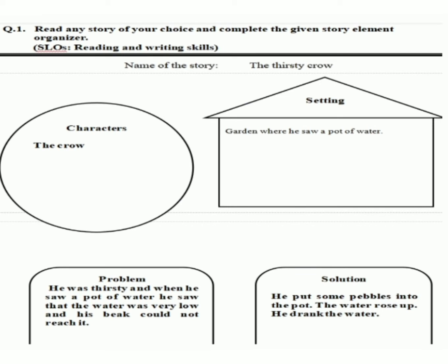Now we will try to solve this question using the concepts of elements we have discussed. I have written my story about the topic: the thirsty crow. A crow was thirsty. He flew here and there in search of water but found none anywhere. In the end, he reached a garden where he saw a pot of water. The water in that pot was very low to reach his beak. He thought of a plan. He put some pebbles into the pot. The water rose up. He drank that water and flew away.